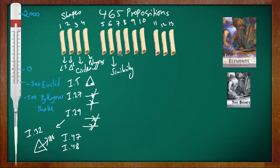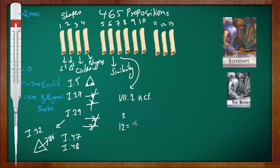Book 7 is interesting because Books 5 to 10 are about number theory — these books are not just about geometry. For example, Book 7 has a proposition about HCF — how do you find the highest common factor? In Book 7 he also defines prime numbers, even numbers, and odd numbers. He defines a prime number as a whole number greater than one that can only be divided by itself and one. Any composite number can be broken down into prime numbers. For example, 12 is composite: 2 × 2 = 4, and 4 × 3 = 12.